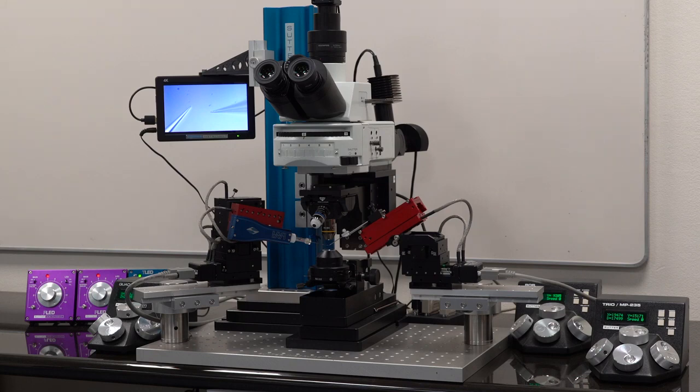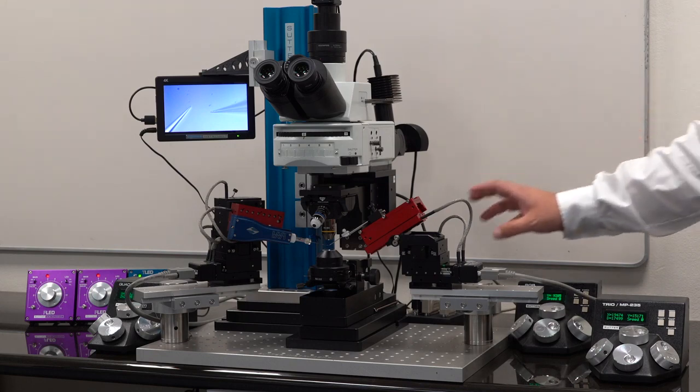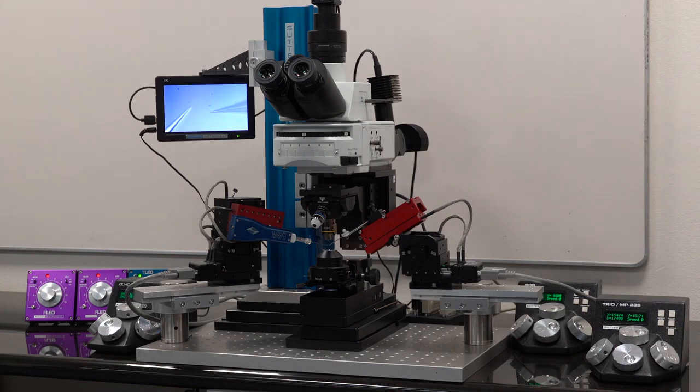This entire Bob system is mounted on a motorized XY translator that moves 25mm in X and Y. And on top of that translator is a white light transmitted light system that's waterproof. And also contains the Olympus OCC condenser.